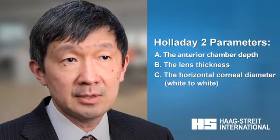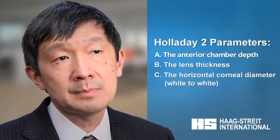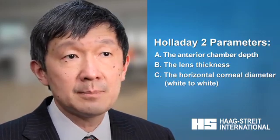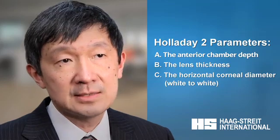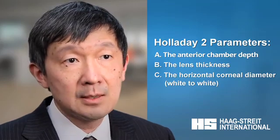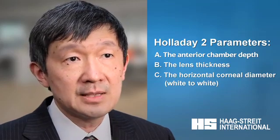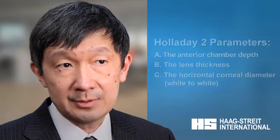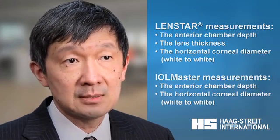The horizontal corneal diameter, also known as white to white. Currently the most common optical biometry units are the IOLMaster 500 and the LensStar. Both measure the anterior chamber depth and horizontal corneal diameter. One of the main differences between these two units is that the LensStar measures the lens thickness whereas the IOLMaster does not.